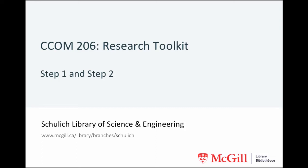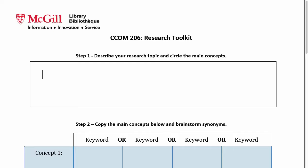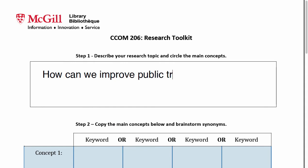We are going to walk through the first two steps of the Research Toolkit in preparation for finding articles on a topic. The first step is to write out the topic of interest, such as: How can we improve public transportation for wheelchair users?